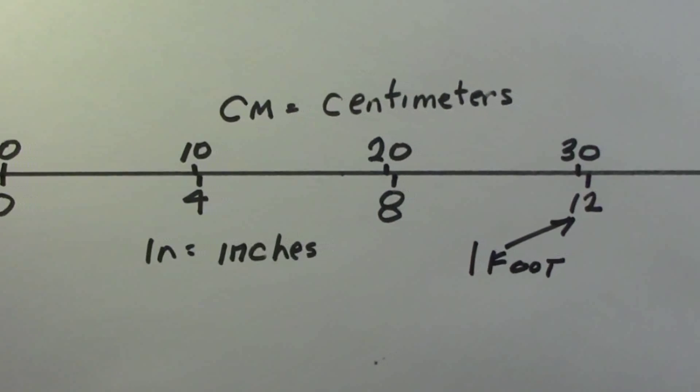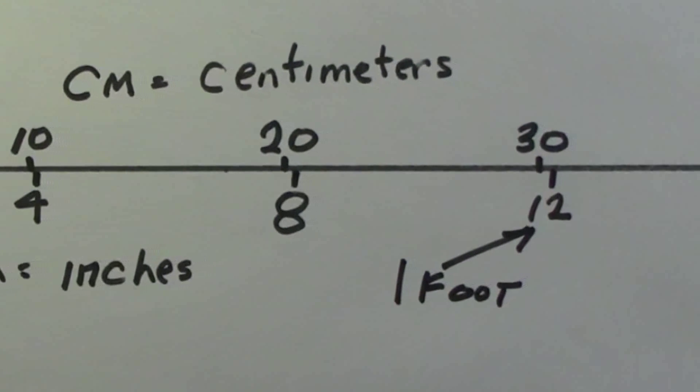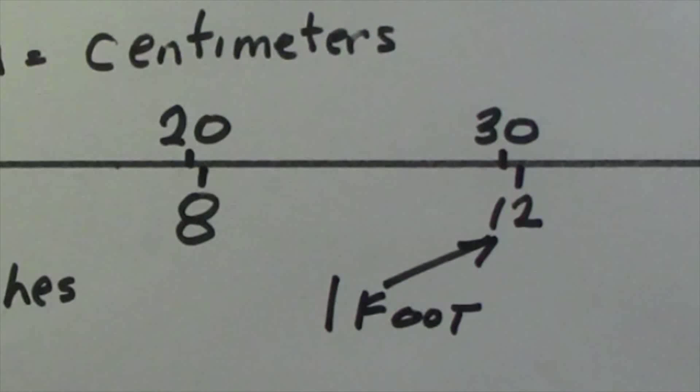12 inches is also the same as a foot. Now just remember this one: 30 centimeters is about the same as 12 inches, and 12 inches are in a foot.